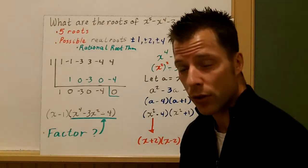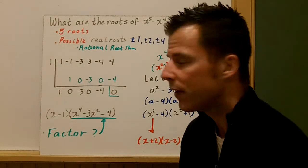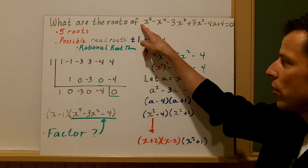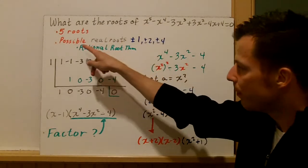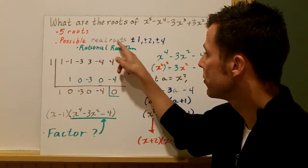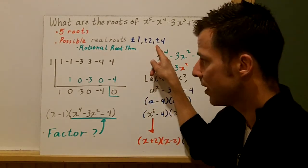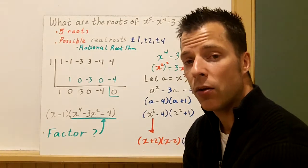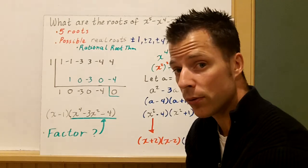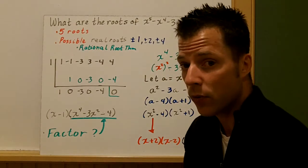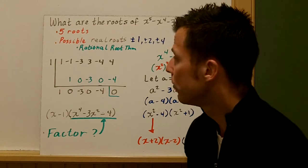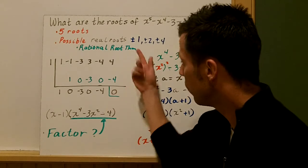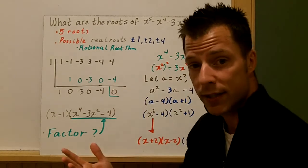We can use polynomial division and the rational root theorem that we've talked about to help us. I see the largest power is 5, so I know there's five roots, whether they're all real or a combination. Using the rational root theorem, I look to my constant and I see that it's 4, and my leading coefficient is 1. So the possible real roots are ±1, ±2, and ±4. Be careful when you use the rational root theorem. It only tells you the possible real roots. It does not tell you if there's imaginary and what they are.